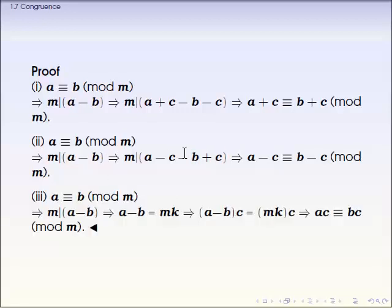The third one, same routine steps. A is congruent to b modular m, which means m is a divisor of a minus b, which means a minus b is a multiple of m, which can be written by m times k for a certain integer k. Then we can multiply any integer c on both sides, but still keeping this equality between them. So a minus b times c equals mk times c.